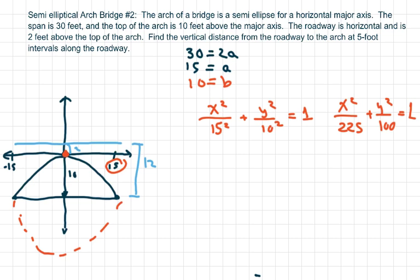So here's the catch: the roadway is horizontal and it's 2 feet above the top of the arc. So there's your 2 feet right here. This whole length is 12 feet from the center where the bridge stops. We need to find the vertical distance from the roadway to the arc at 5-foot intervals along the roadway — so at 5, 10, and 15 feet.